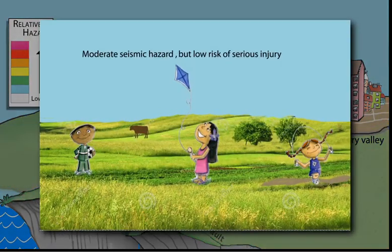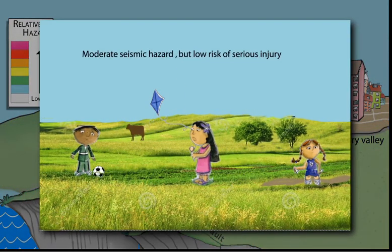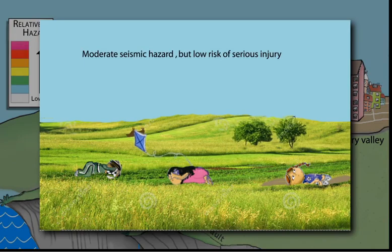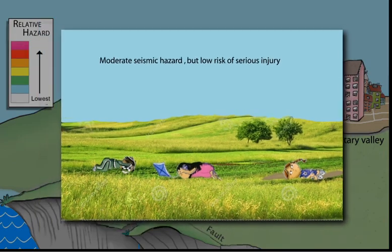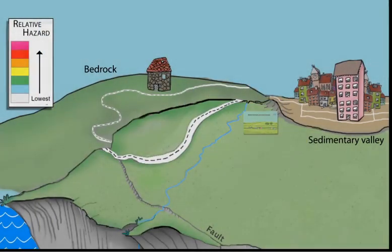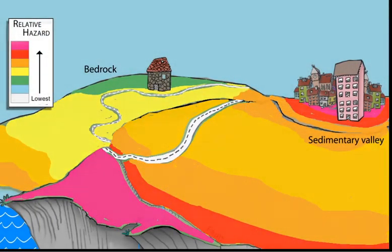In an open field, someone experiencing strong shaking would just fall down. Hence, most seismic risk comes from the possible collapse of buildings due to shaking.